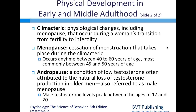There are also hormonal changes at this stage. The term climacteric describes the physiological changes, including menopause, that occur during a woman's transition from fertility to infertility. Menopause is the cessation of menstruation that takes place during the climacteric, occurring anytime between ages 40 and 60, most commonly between ages 45 and 50.